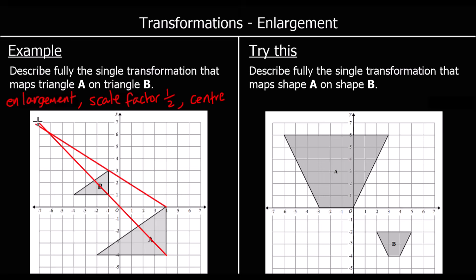And that will be the center of enlargement. They all meet at negative six, six. So the center of enlargement is negative six, six. And if we checked with a point: to get from the center of enlargement to the top corner of A, we go along ten, down six. If we half that, we'd go along five, down three — and that lands on the corresponding point on B.